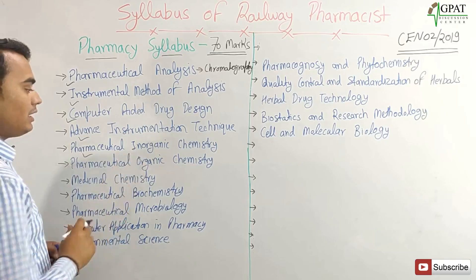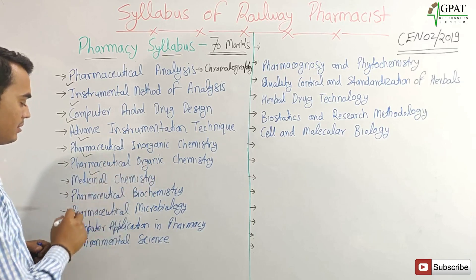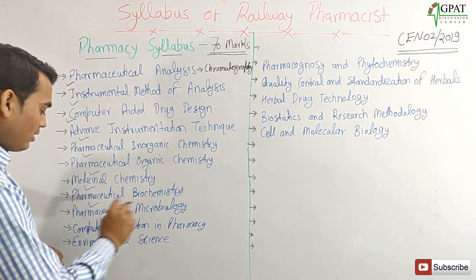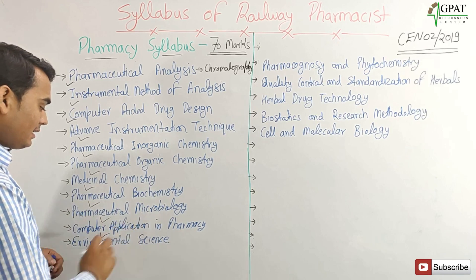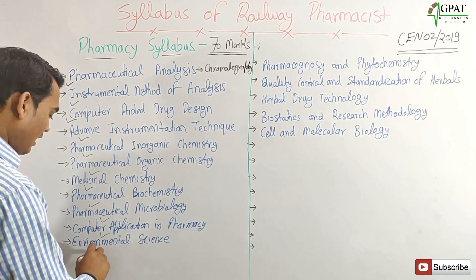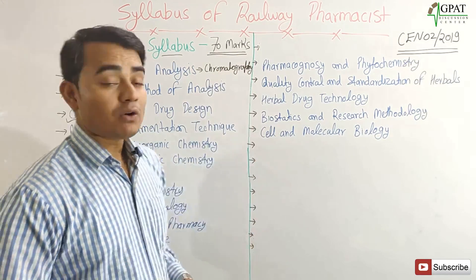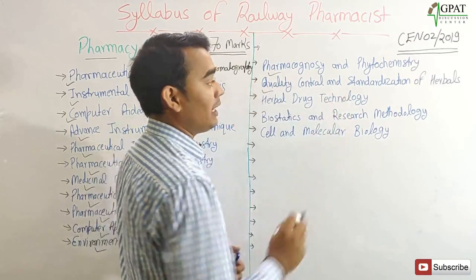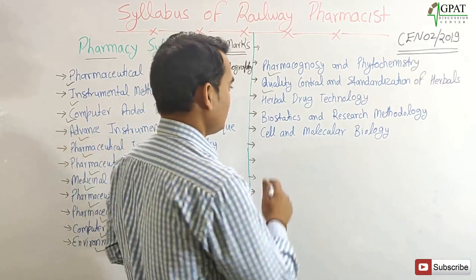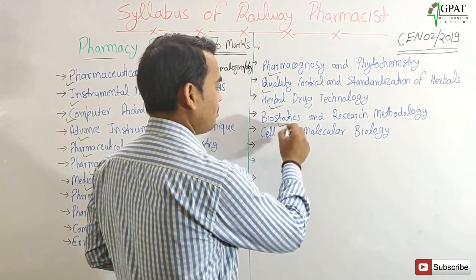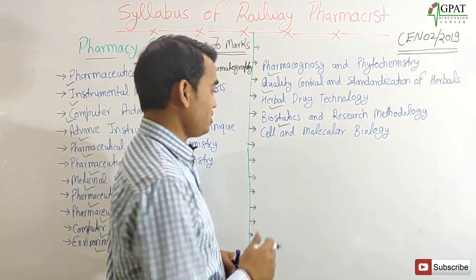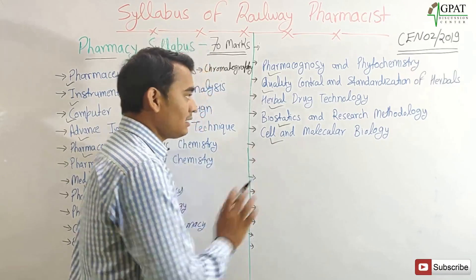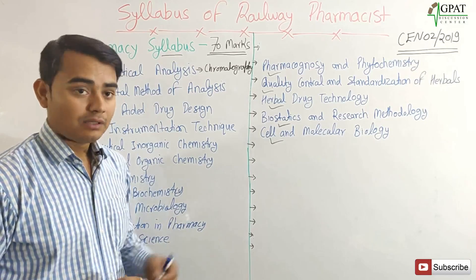Next are: Pharmaceutical Inorganic Chemistry, Pharmaceutical Organic Chemistry, Medicinal Chemistry, Pharmaceutical Biochemistry, Pharmaceutical Microbiology, Computer-Aided Drug Design and Computer Applications in Pharmacy, Environmental Science. Under Pharmacognosy: Pharmacognosy and Phytochemistry, Technology, Industry, Quality Control, Sterilization of Herbals, and Herbal Drug Technology. Also, Biostatistics and Research Methodology, and Cell and Molecular Biology. These subjects cover the total 70 questions, each carrying one mark — 70 marks in total.